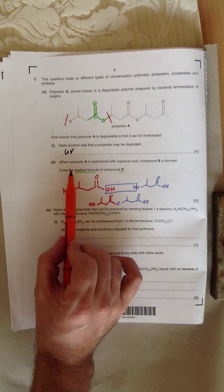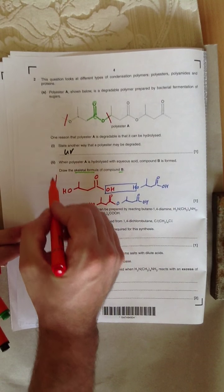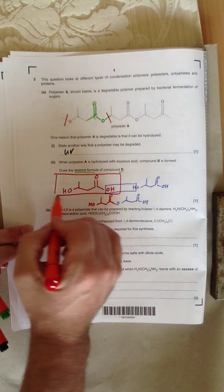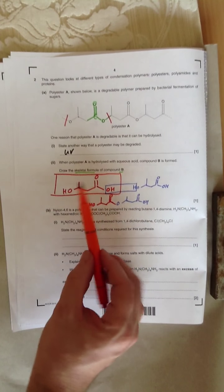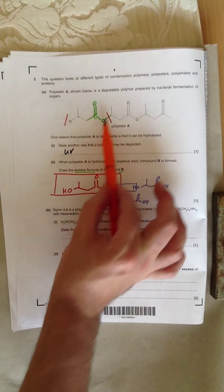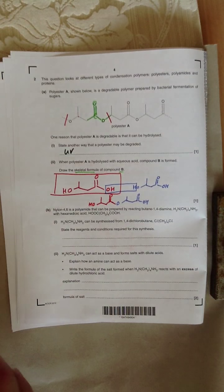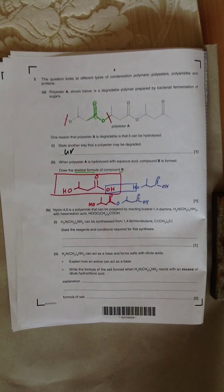So going back to the question, draw the skeletal formula of compound B. The skeletal formula is that. And what I've done there is I've showed you how I've pulled apart that polymer to show you how to work out the monomers it comes from.